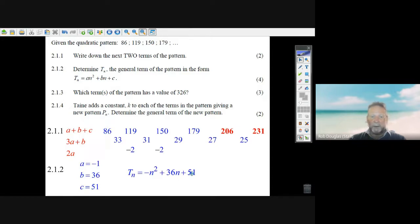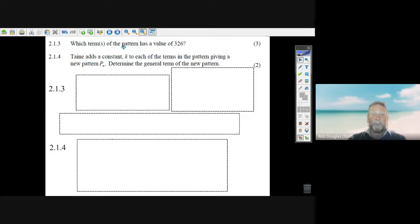You can just write out your answer. The formula is minus 1 n squared—that's your a—plus b, which is plus 36n, and plus the c, which is 51. The next question says which term of the pattern has a value of 326.